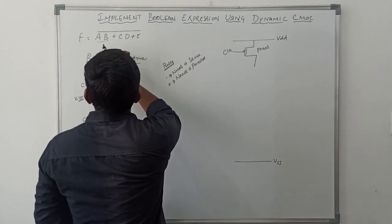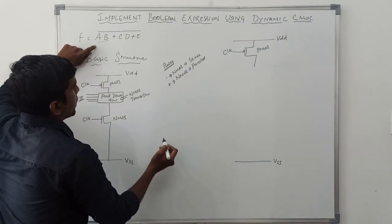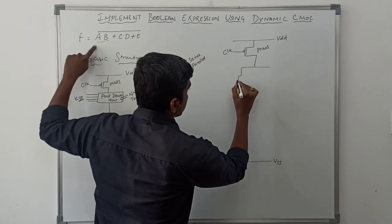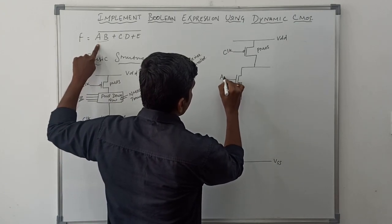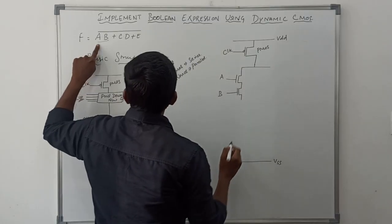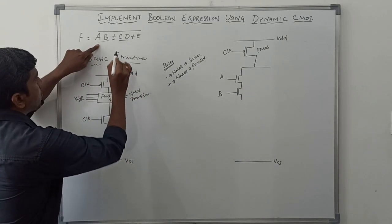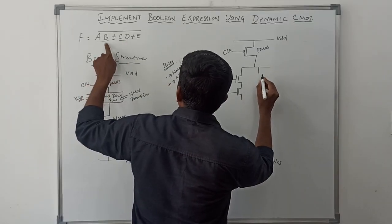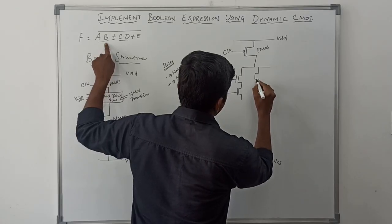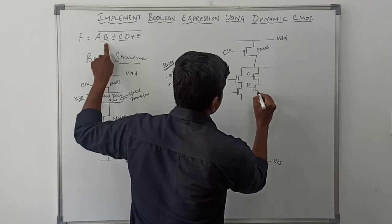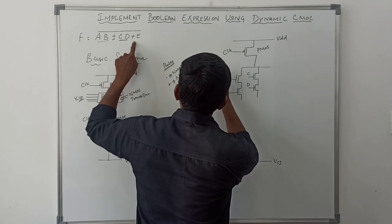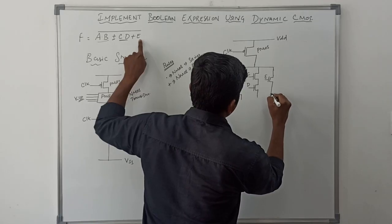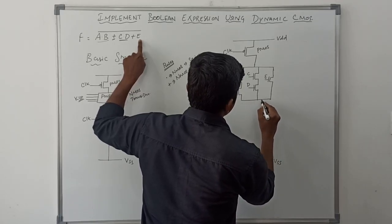In this boolean expression, the first term is A dot B. Since the dot operator is present, the NMOS transistors connect in series — these two transistors have inputs A and B. The next term is C dot D. Since the plus operator comes before it, C and D connect in parallel with A dot B; C and D transistors are in series with each other. Then, plus again means parallel, so the E transistor is connected in parallel with C and D. This is the pull-down network.